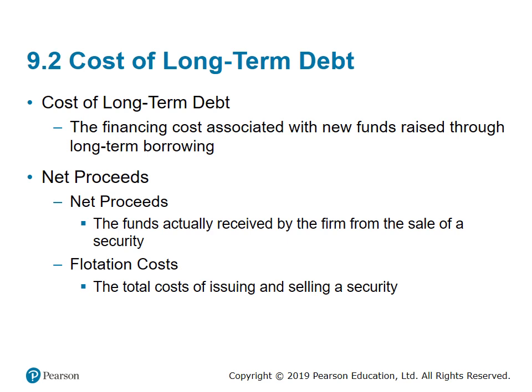When issuing bonds, the first important concept is net proceeds. Net proceeds means the funds actually received by the firm from the sale of a security. For example, if a security sells for $100 but I paid $20 in flotation costs and commissions, then the actual money received — the net proceeds — is $80. Flotation cost is the total cost of issuing and selling a security: underwriting costs, commissions, administrative costs — all of these are flotation costs.